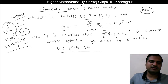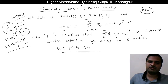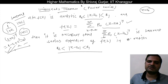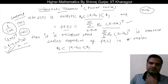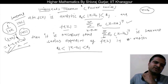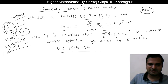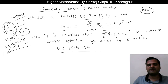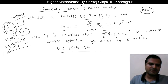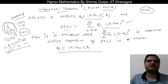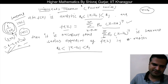Now we used the geometric progression concept to get this expansion. Can we say this is the Laurent series expansion of 1/(1+z)? Yes, we can say so by the Uniqueness Theorem. The function 1/(1+z) for |z| < 1 — we found its expansion using the GP concept.